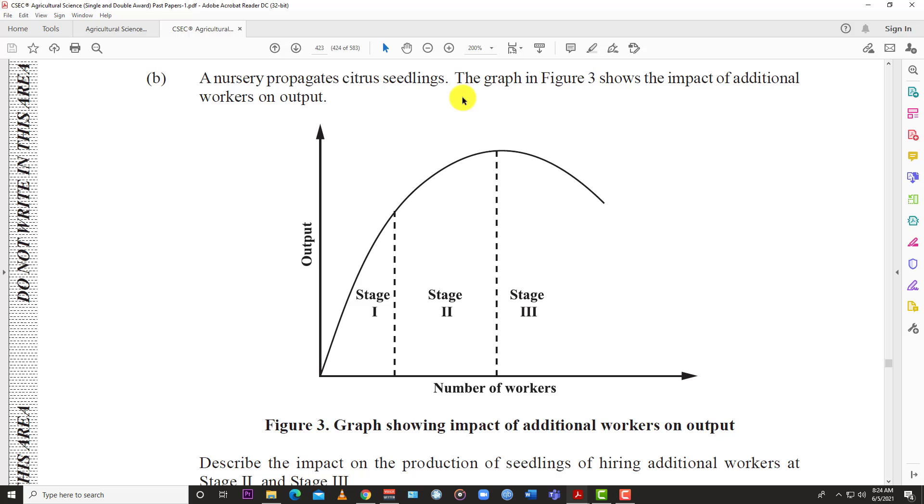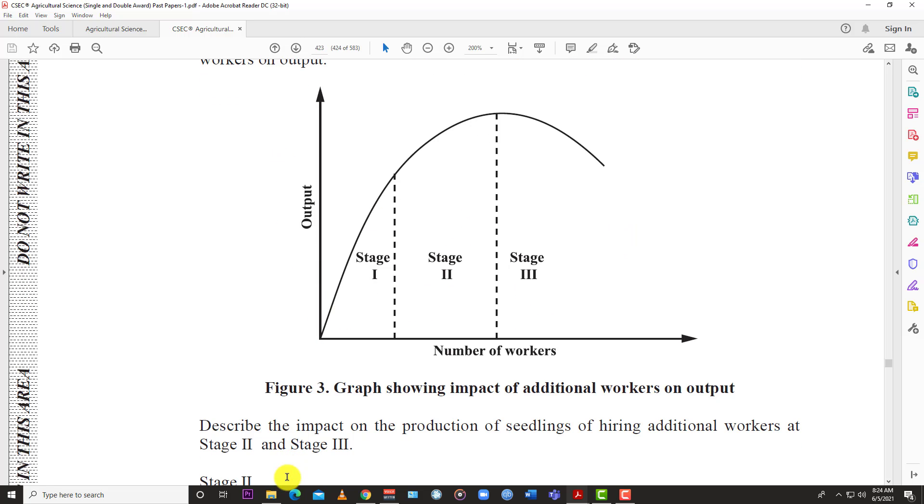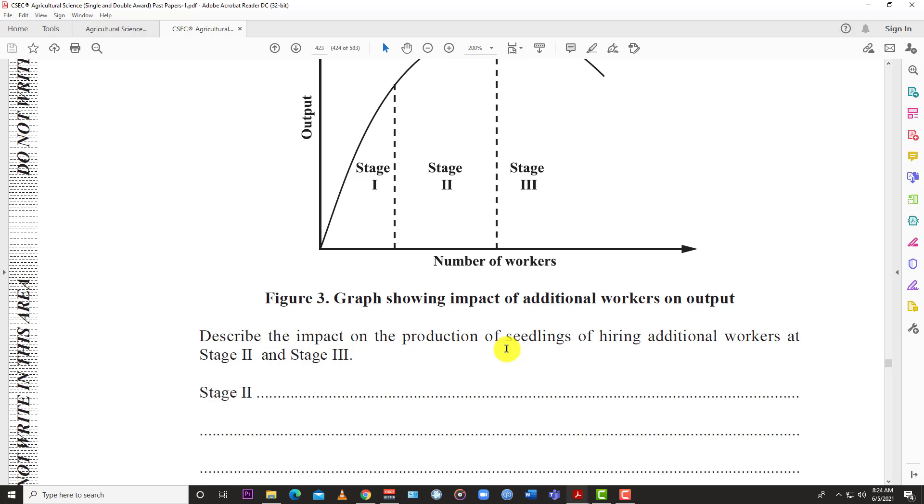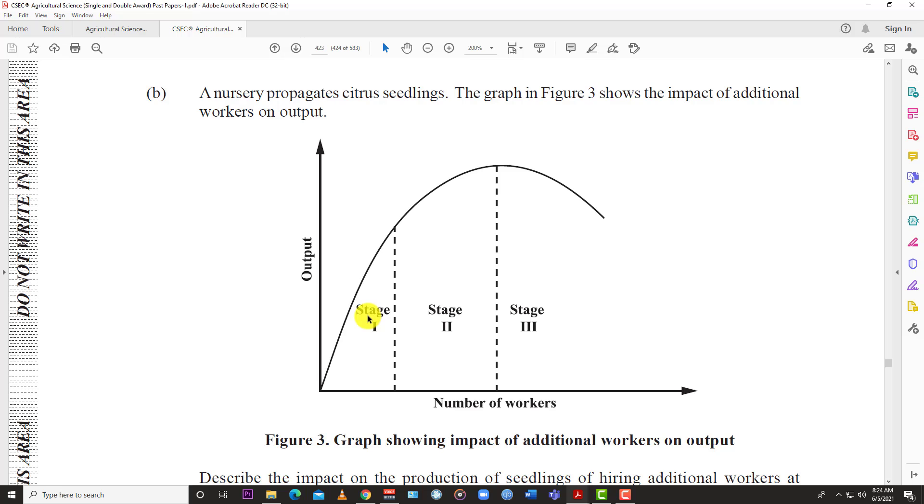A nursery propagates citrus seedlings. The graph in figure three shows the impact of additional workers on output. So you have the output, stage one, stage two, stage three, number of workers. The question is asking to describe the impact on production of seedlings of hiring additional workers at stage two and three. So what they're testing here is your knowledge of diminishing returns, where you keep adding a variable factor to a fixed factor. You will see some increase in production but only to a certain point where you start increasing at a diminishing rate.